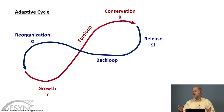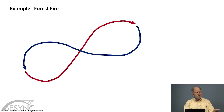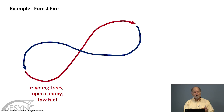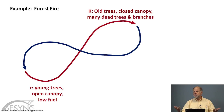That was the basic unit of change we were using to organize our thinking in the mid-90s. An example from ecosystems is forest fire. At the beginning you have young trees and open canopy, essentially no fuel. After a few hundred years you have a forest of old trees, a closed canopy, lots of dead trees on the ground, lots of branches — a lot of fuel lying around. Eventually there may be a fire and the site is barren for a while.